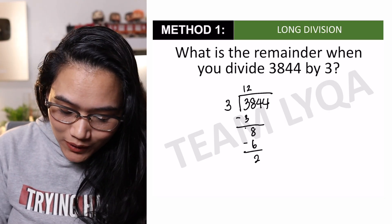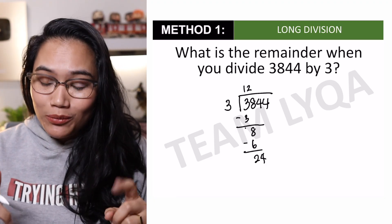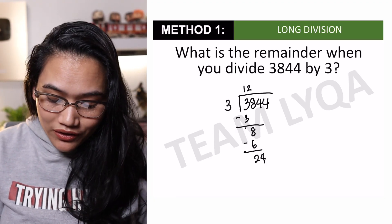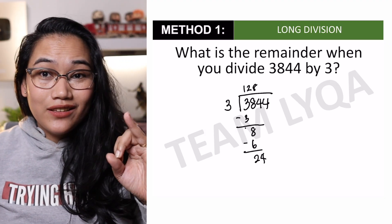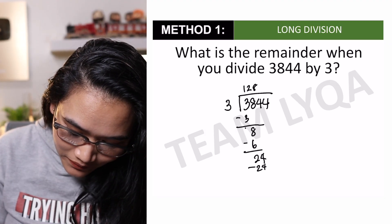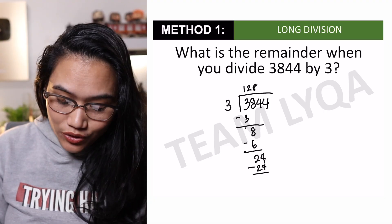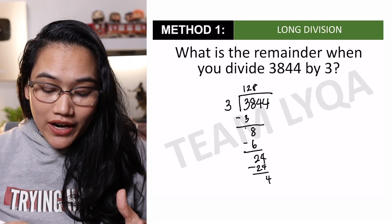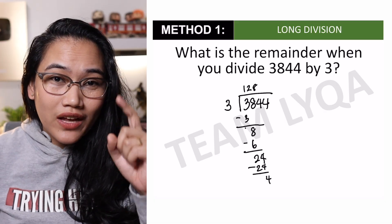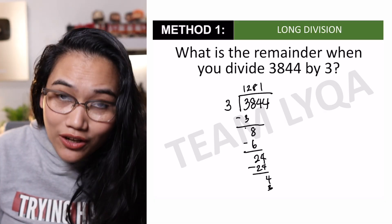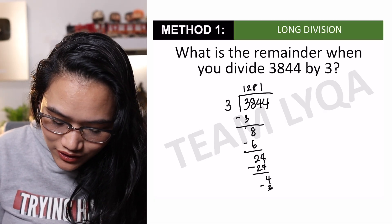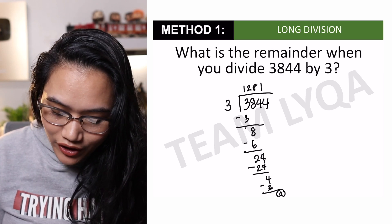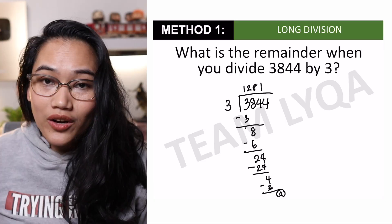Next, 24 divided by 3 — that would be 8. 8, 16, 24 — so this will be 24. Subtract natin sya — 0. Ibababa natin ngayon yung huling 4. 4 divided by 3 — ilang 3 ang kasya sa 4? That would be 1. 3. At dito na tayo magtatapos. Kasi 4 minus 3, ang sagot ay 1. So, may remainder o tira tayo na 1.